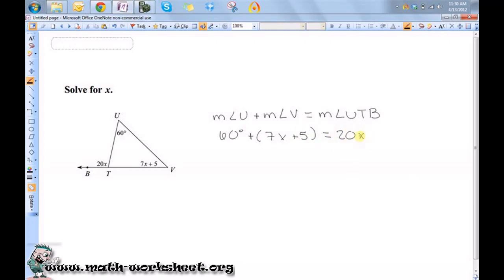So I just need to combine my like terms, so I get 65 plus 7X is equal to 20X.